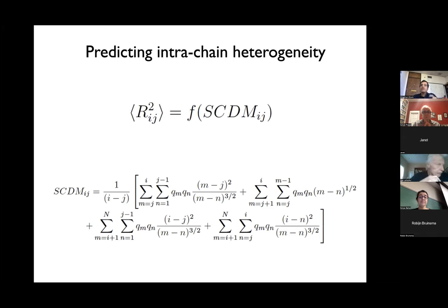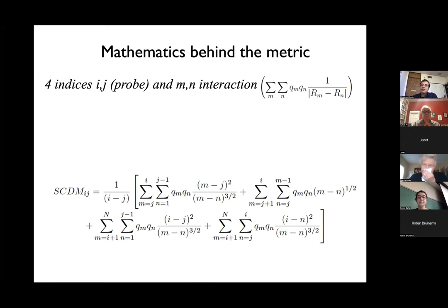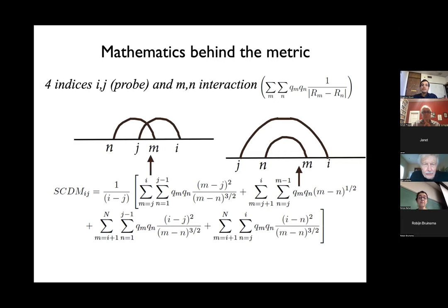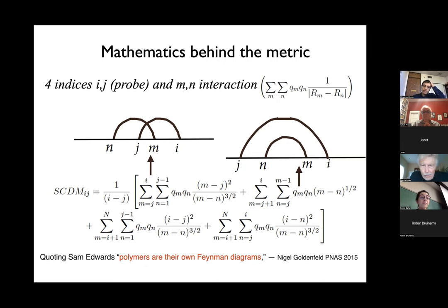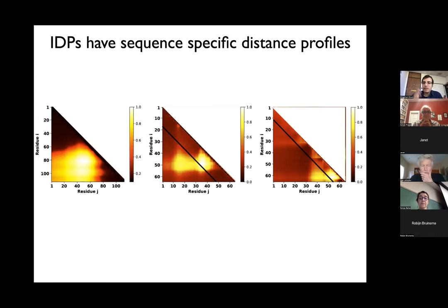You might be wondering where these terms come from. When you probe a specific amino acid pair i,j, the electrostatic context comes from summing over all other amino acid pairs, creating a competition between these different pairs of indices. If you work through them, these are actually exactly Feynman diagrams — and to quote Sam Edwards, whose Hamiltonian I showed you earlier, he always used to say 'polymers are their own Feynman diagrams.' These are very natural in polymers.